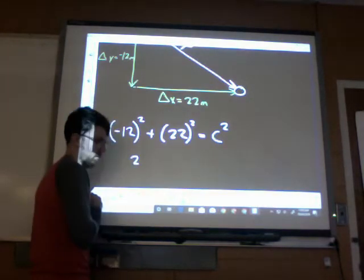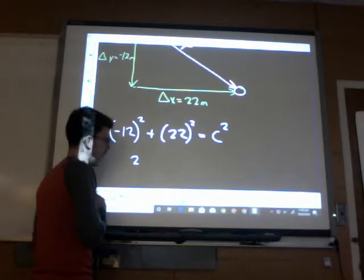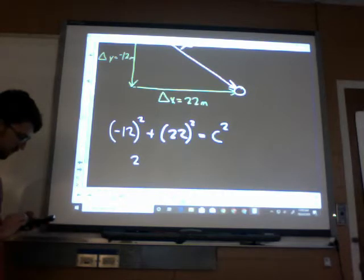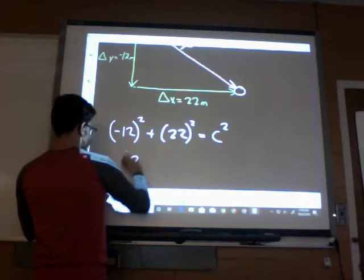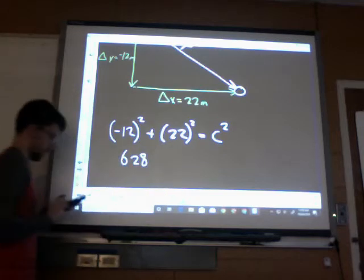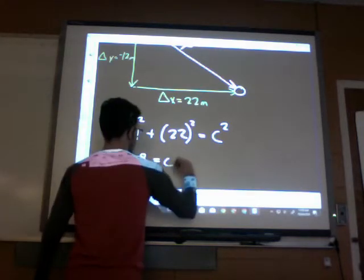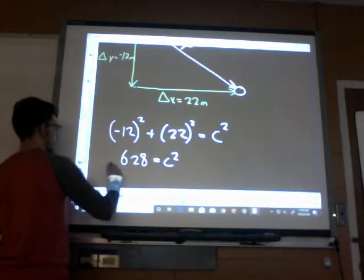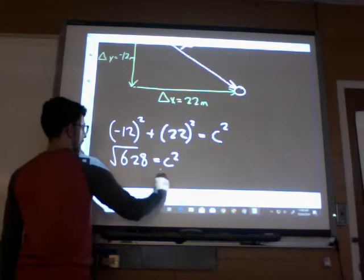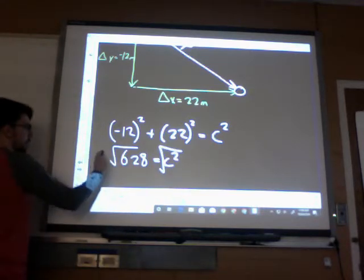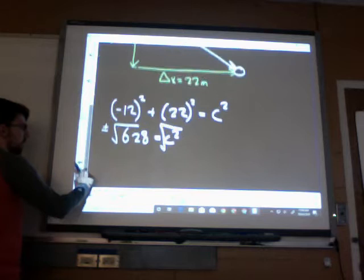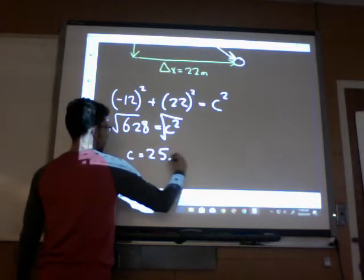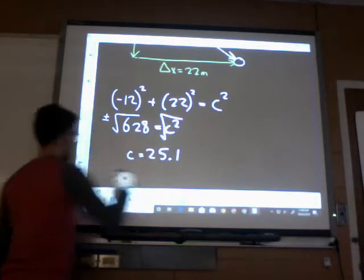Oh yeah, 144 and whatever that one is. I'm just going to add them together, so 628, I think. The square root, I'm supposed to put a plus or minus. 25.05, so yeah, maybe 25.1.